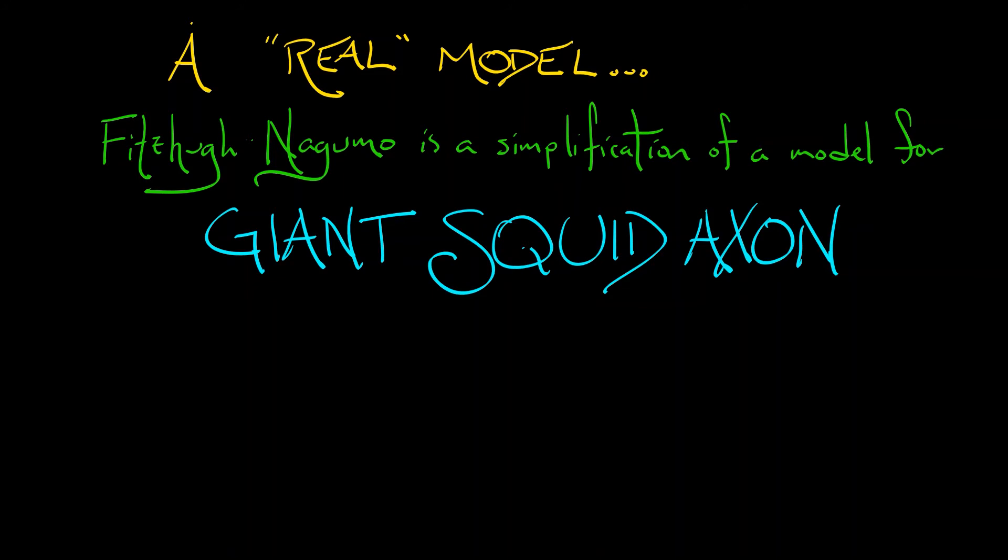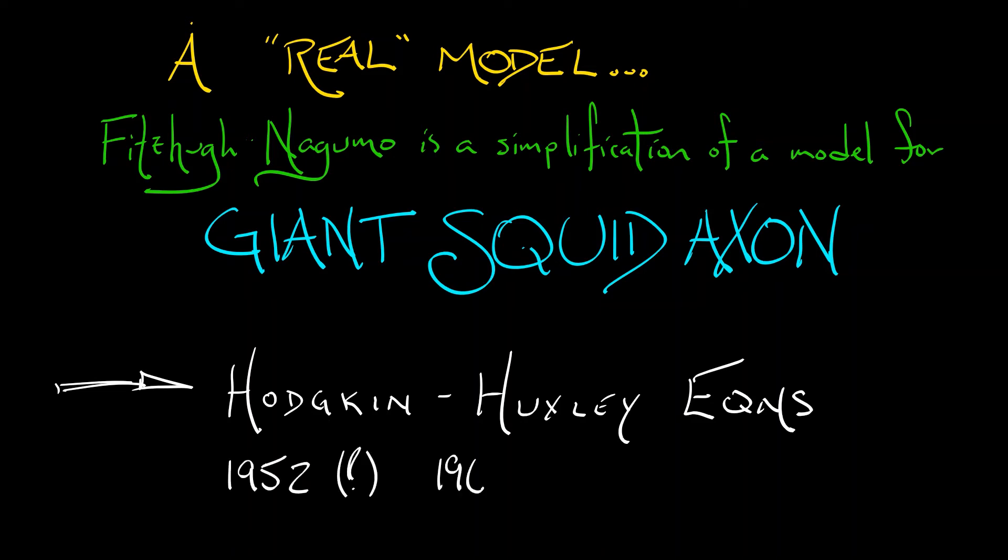It's based on experiments done with these giant squid axons. These are the Hodgkin-Huxley equations. This is based on some really very difficult, extensive experimental and modeling work done in 1952, work that won the 1963 Nobel Prize. Let's take a look at this model.